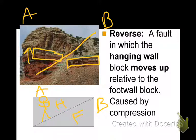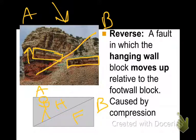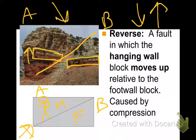Really the only thing you need to identify from a picture is which is the hanging wall and which is the foot wall, then know that if the hanging wall moves up, that's reverse, and if it moves down, it's normal. You can think of it this way: normally if you fall, you fall down — so a normal fault moves down, and reverse would be the opposite, which is up.